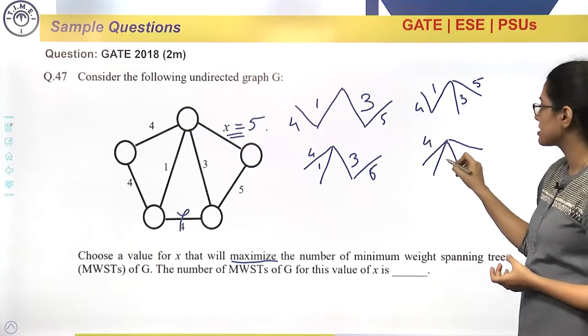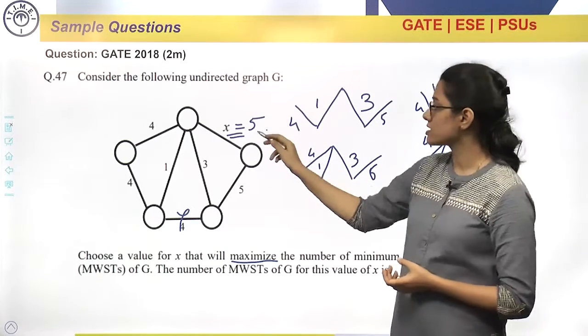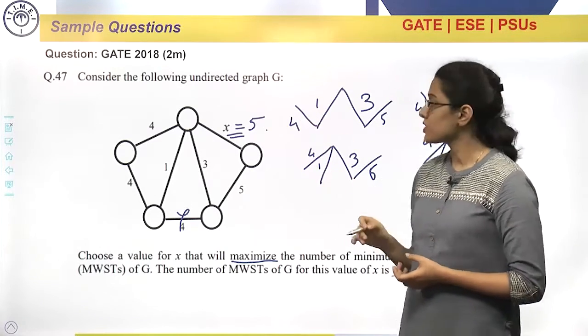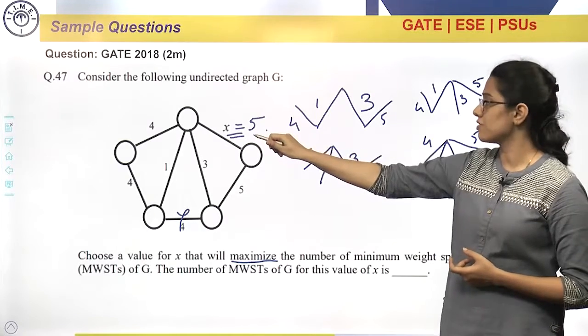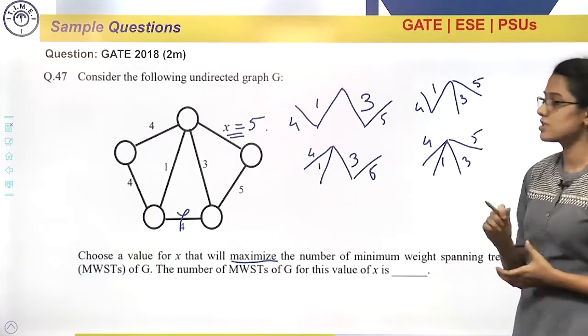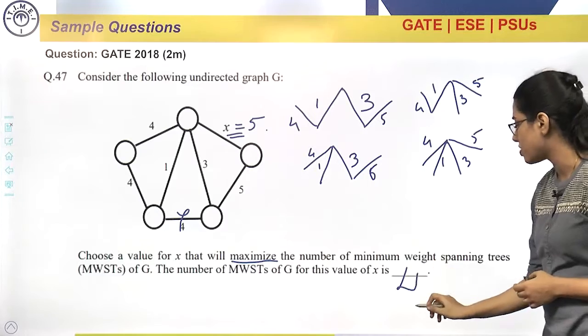So what we have to take is, we have to take the same value over here. So question is not to find out this x value. x value is 5. Question is how many structures are possible. So total 4 structures are possible.